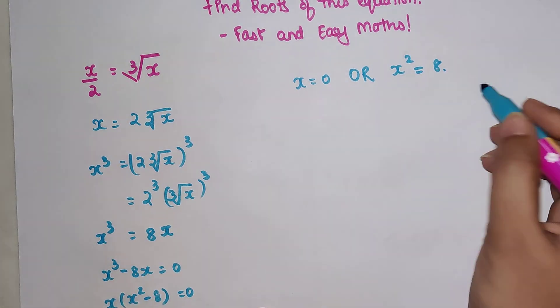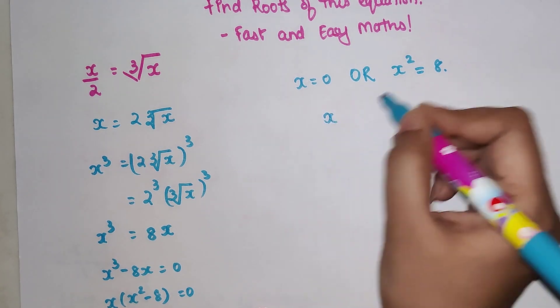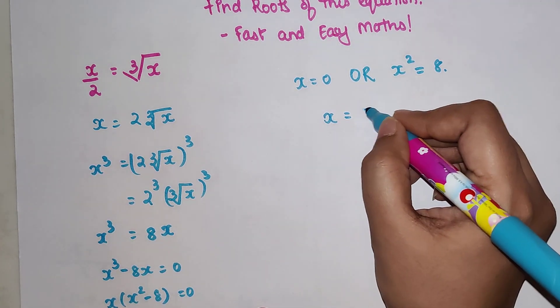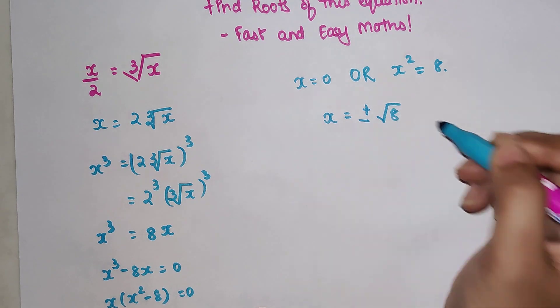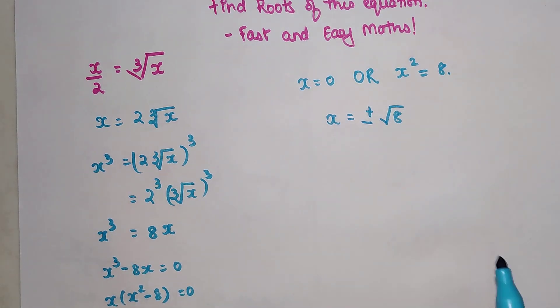So now here we have x squared. Taking square root on both sides, I get plus minus square root of 8. Please understand, always remember, whenever you are taking a square root you have to consider there is a plus minus sign.